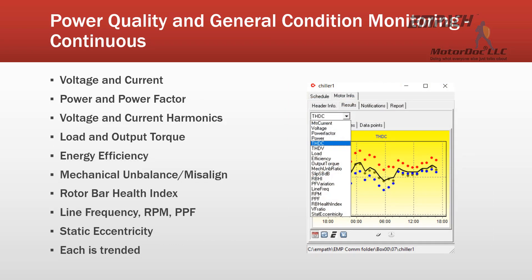We do take a look at power quality. We look at voltage and current, power and power factor, voltage and current harmonics. We do look at load and output torque, as well as efficiency. The difference is we also look at mechanical unbalance and misalignment. We do look at the rotor bar health index and provide a trend for that, as well as alarms. We also take a look at line frequency, RPM, and pull-pass frequencies, and keep track of static eccentricity. Each is trended, and we're capable of identifying faults during normal operation as well as during more in-depth data collection, which looks at the entire system.